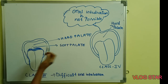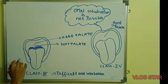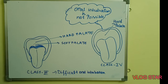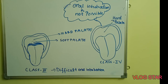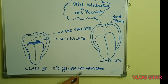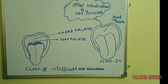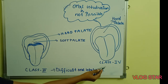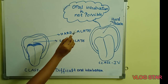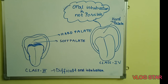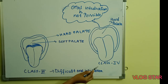In Class 3, the entire portion of the uvula is not visualized, and Mallampati Class 3 is associated with difficult oral intubation. In Mallampati Class 4, the only structure visible is the hard palate.